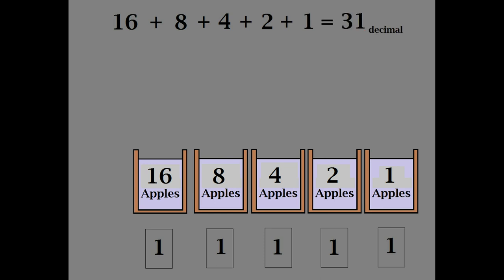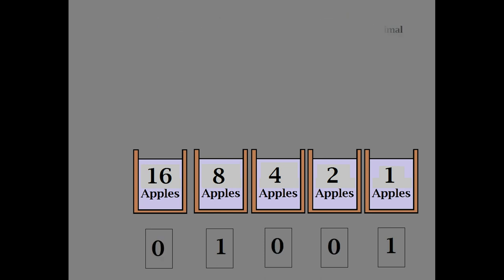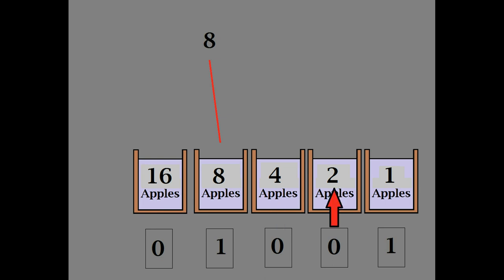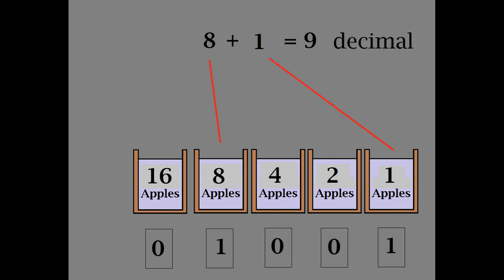But you may be asking, what do you do with the buckets that aren't full? Let's look at this example: 01001. Since the 16 apple bucket shows a zero, you just ignore it. 8 apples is a 1, so you add it. Ignore both 4 and 2, then add the 1. Your answer? This is the same thing as the number 9 in decimal.